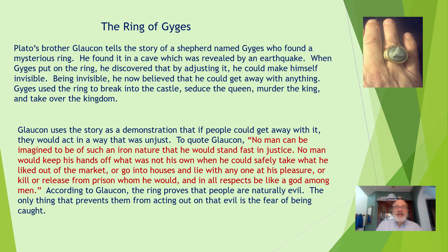Glaucon uses the story as a demonstration that if people could get away with it, they would act unjustly. To quote Glaucon: 'No man could be imagined to be of such an iron nature that he would stand fast in justice. No man would keep his hands off what was not his own when he could safely take what he liked out of the market, or go into houses and lie with anyone at his pleasure, or kill or release from prison whom he would, and in all respects be like a god among men.' According to Glaucon, the ring proves that people are naturally evil. The only thing that prevents them from acting on that evil is the fear of getting caught.